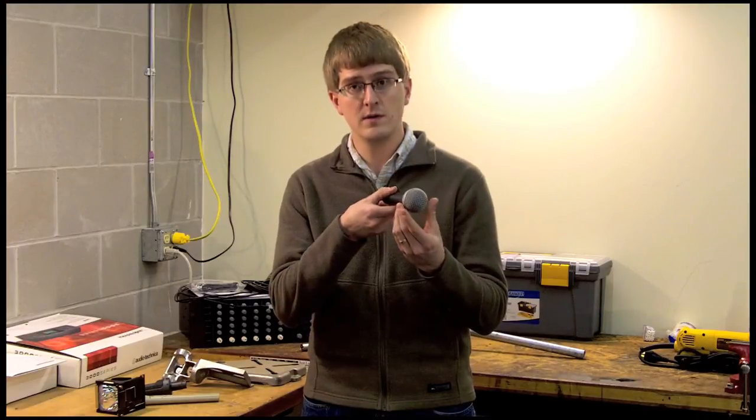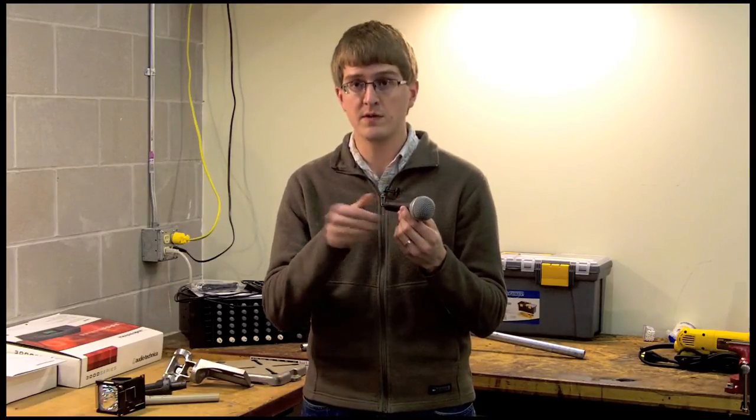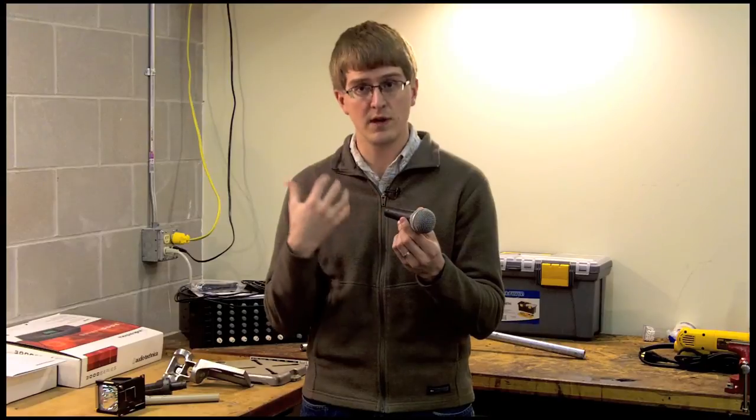Now microphones come in two general pickup patterns. The first is called cardioid, and cardioid microphones are largely like a flashlight. When you aim the microphone at a source, what's in front of it will be picked up the most. Everything to the sides and to the rear will be rejected.